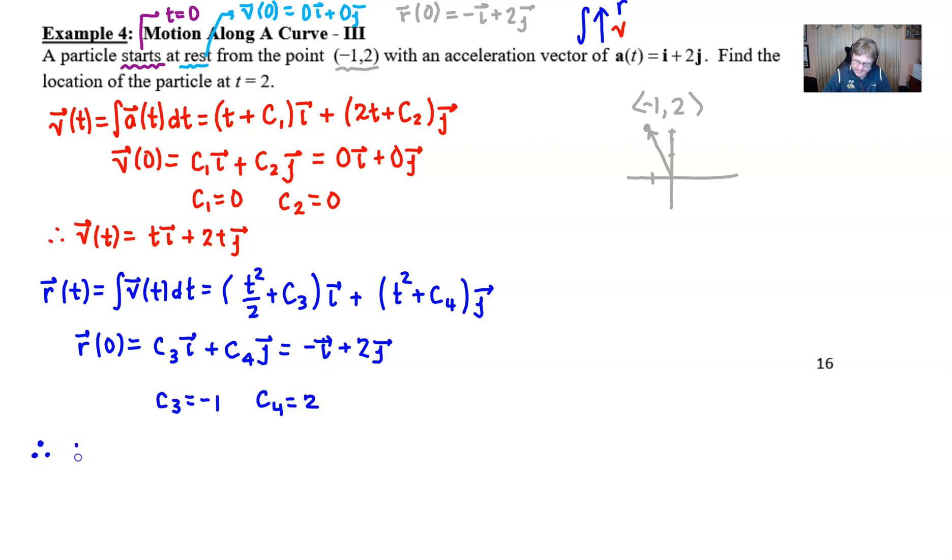So what that says is our final position vector in all its wonderful glory is (t²/2 - 1)i + (t² + 2)j. And now we can finally answer the question. Find the location of the particle at time 2. So we just simply plug 2 in for t. Now 2² over 2 of course is 4 over 2. 2 minus 1 is 1. So we have 1 times i and then 2² plus 2. That's going to be a 6 times j.